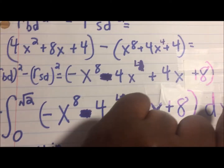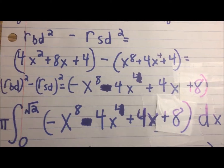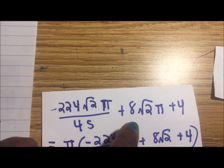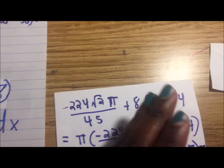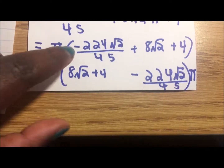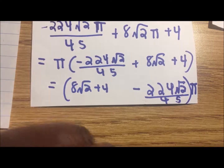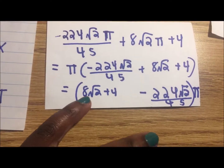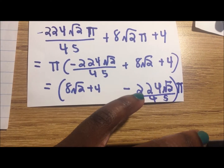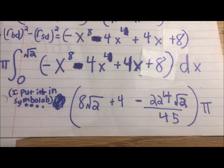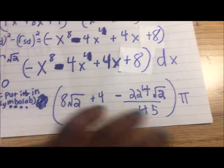I plugged this into Symbolab because it's a lot to compute. The result, rearranged to be easier to read, is: pi times (8 root 2 plus 4 minus 224 root 2 over 45). That's the final answer — you just plug it in and add pi at the end.